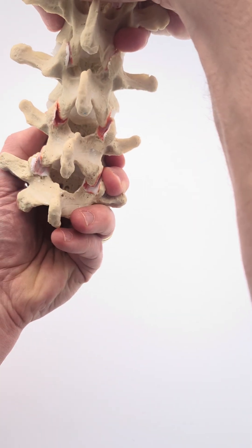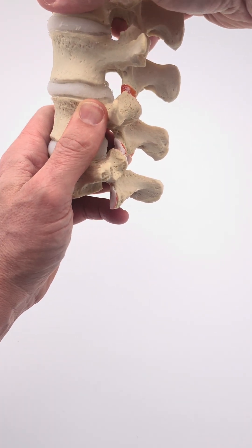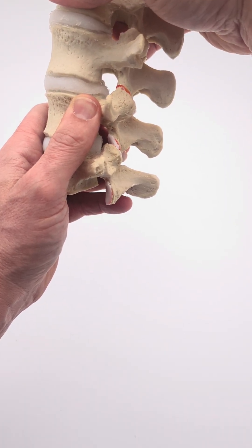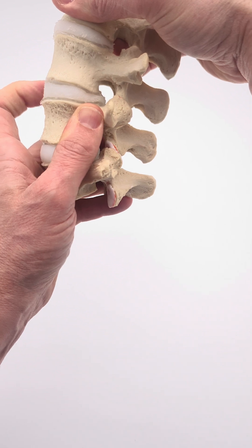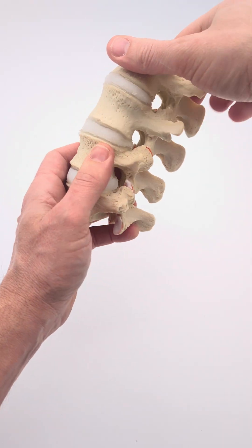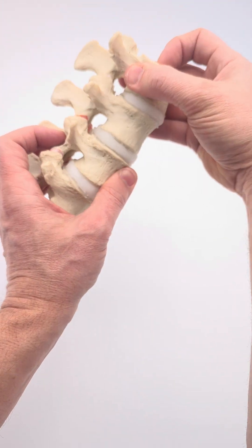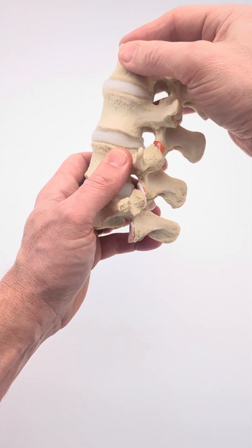And with that segment now, the facets likely have some approximation because of the anterior shear. When they go to stand up, it's sore until the hydraulics restore somewhat in that hypermobile disc. So these dynamic disc models can be very helpful in helping patients understand their symptoms as it relates to their body mechanics.